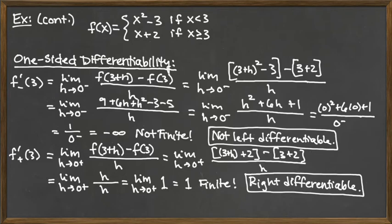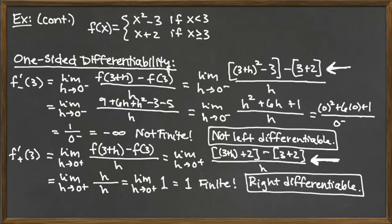What made the right-hand case work is that both evaluations — f of 3 plus h and f of 3 — used the same piece, namely the line. For the left-hand differentiability, the two function evaluations required different pieces: f of 3 plus h used the parabola while f of 3 used the line. That inconsistency, caused by the jump discontinuity, is precisely what made the left derivative fail.